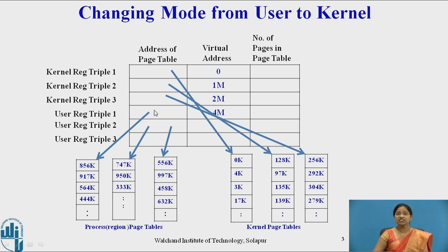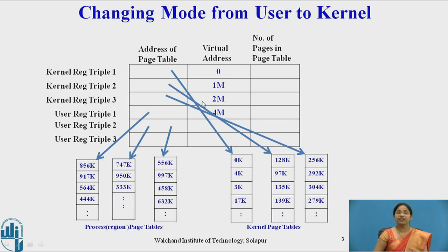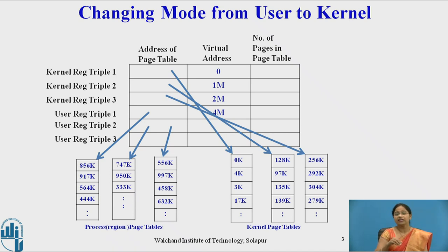Whenever there is a change in mode from user to kernel, it is mandatory to have access to kernel virtual addresses. When a process changes its mode from user to kernel, the kernel must access the kernel addresses. However, this is not mandatory when changing from kernel to user. Many processes execute in the system simultaneously in kernel mode, and the virtual memory mapping is independent of all processes. Therefore, it is necessary to track the virtual address of the processes whenever there is a change from user to kernel mode.